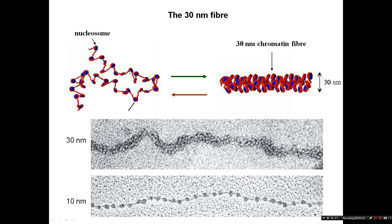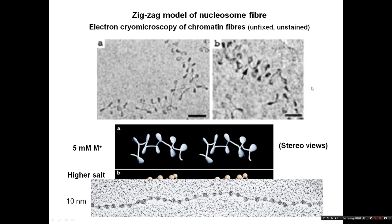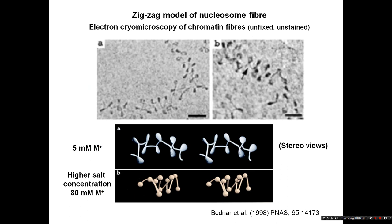The next level of folding is the 30 nanometer fiber, and this is to a large extent an equilibrium. Here we have electron micrograph pictures of the 10 nanometer and the 30 nanometer fiber. For a long time people thought this was a big helix or solenoid — just a big spiral of nucleosomes. However, more recently a range of structural techniques has shown it's actually a zigzag, more of an accordion that can be squashed tight or pulled out and extended. In electron cryo-microscopy we can see the nucleosomes in this sort of zigzag conformation.